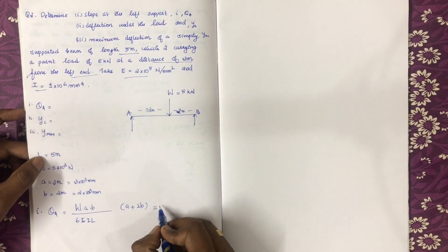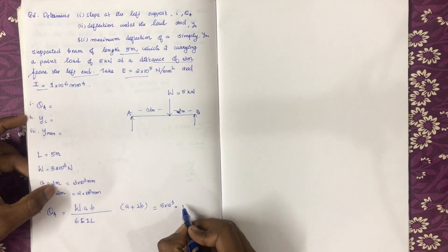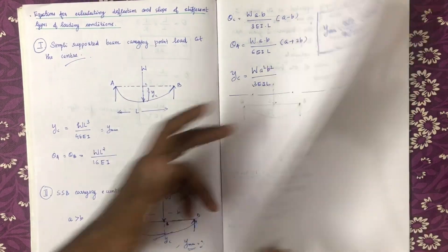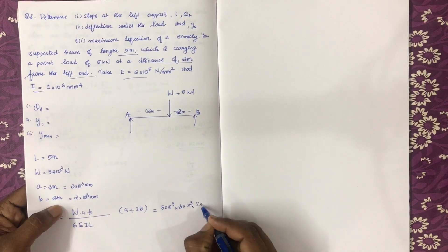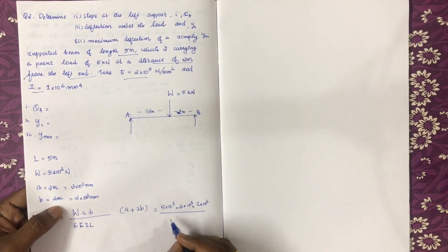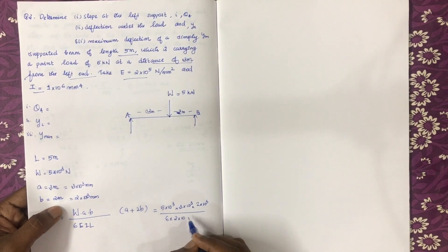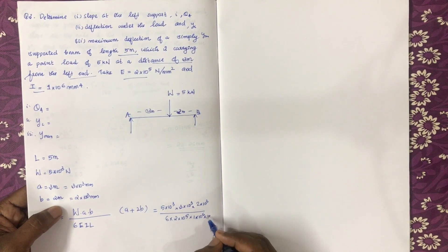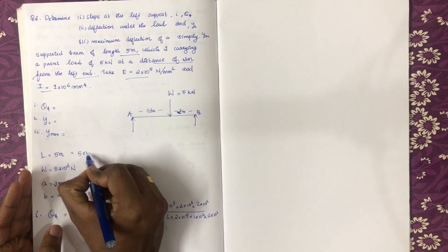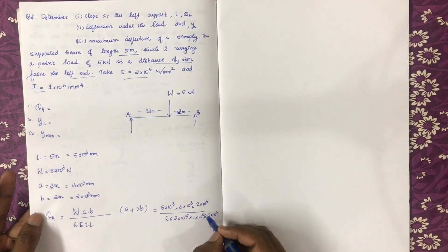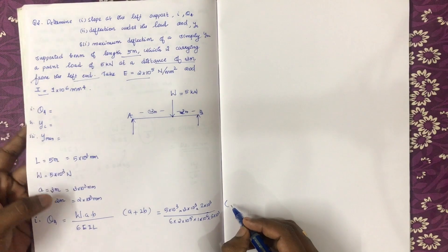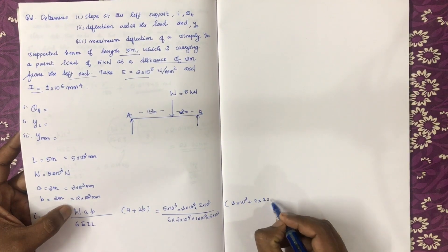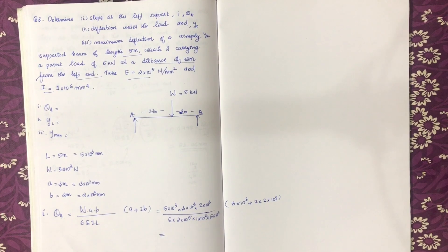W is 5×10³, a is 3×10³ mm, b is 2×10³ mm. Theta A equals the numerator divided by 6 into E (2×10⁵) into I (1×10⁶) into L (5×10³ mm). Multiplying with (a + 2b): a equals 3×10³ plus 2 into 2×10³.